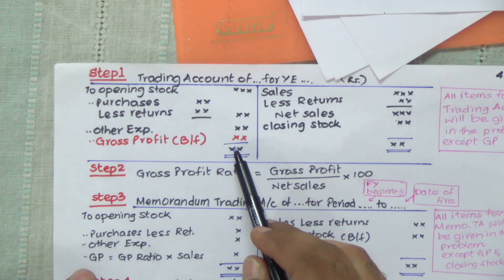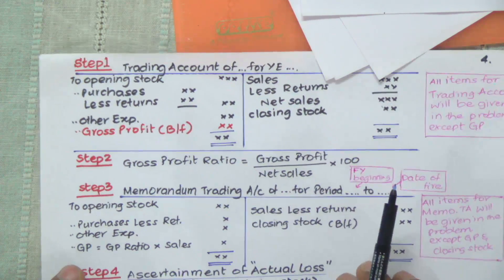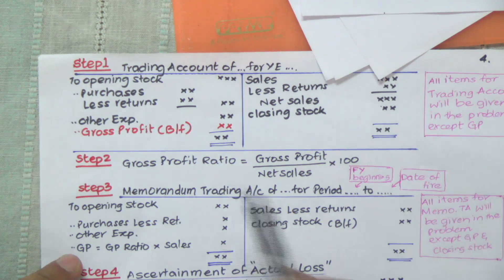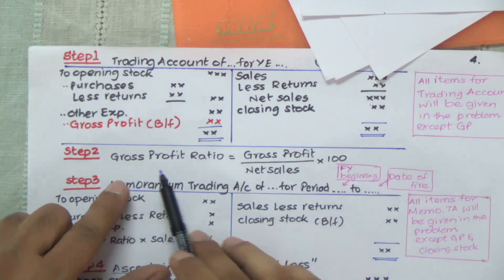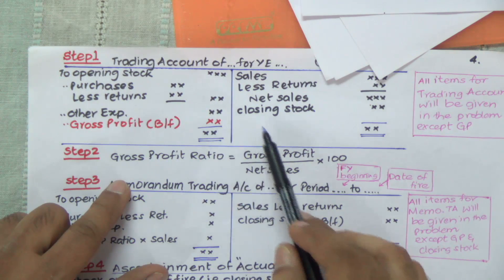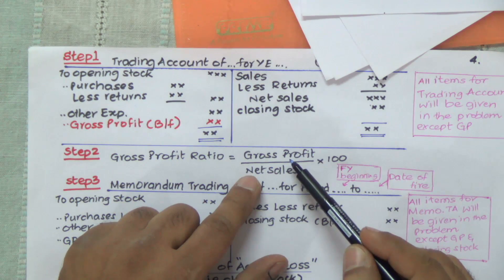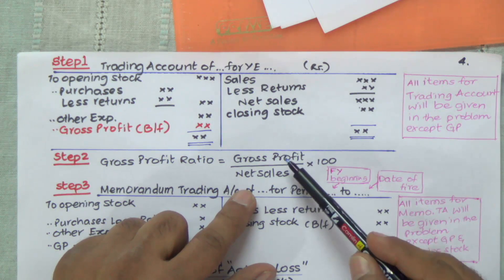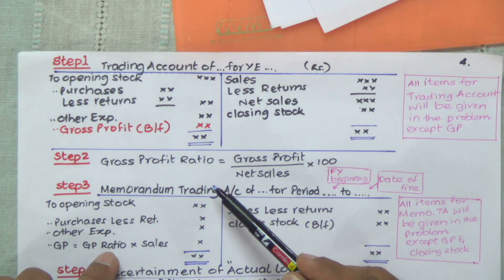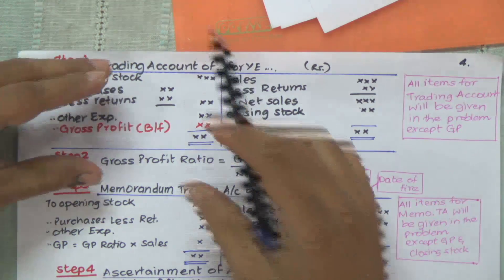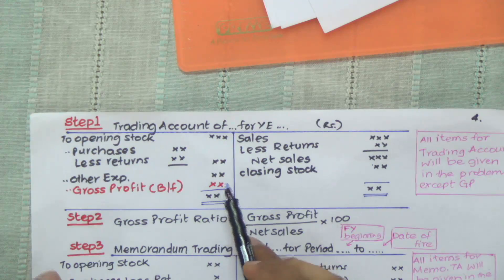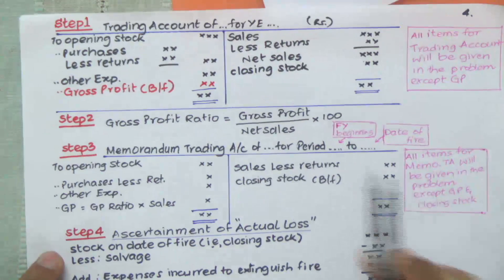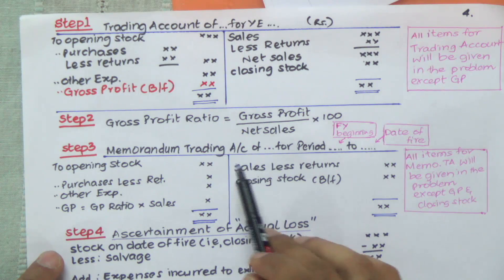This gross profit is calculated with the objective of finding out the gross profit ratio — the trend of the company and what is the earning capacity of the company. Once we get the gross profit, we use it in the gross profit ratio formula: gross profit divided by net sales, multiplied by 100, gives us the gross profit ratio. If the problem already gives the gross profit, then we won't have to prepare the trading account, because the objective of preparing the trading account is to get gross profit. If that's already given, we skip the trading account, use that number in the gross profit ratio, and then prepare the memorandum trading account.